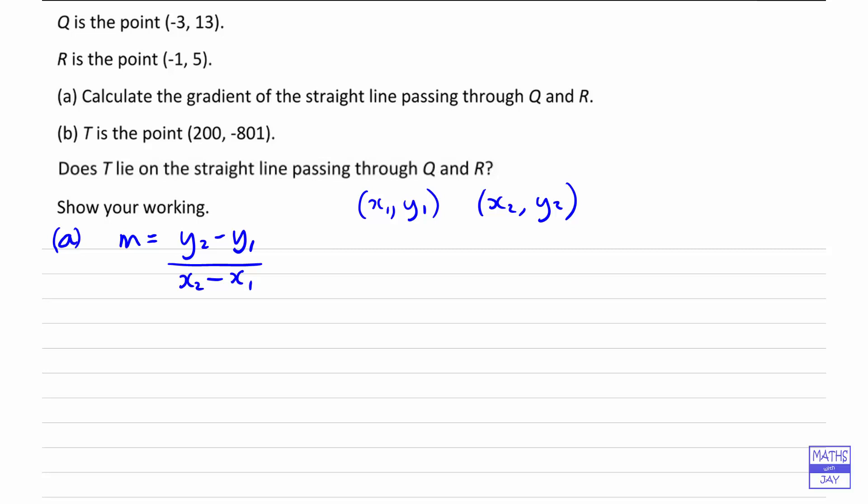Which way round shall we do this? Let's start off with Q as x2, y2. So then that would give us that m is equal to the difference in y coordinates, so 13 minus 5, over the difference in the x coordinates. So that's going to be negative 3 subtract negative 1. So we've got 8 over negative 3 plus 1, which will be negative 2.